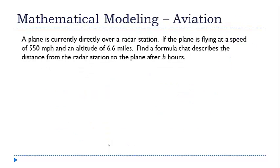So here we have another example from aviation. We have a plane that is currently directly over a radar station. So we have the ground here, and we have this radar station, and we have a plane that is directly above it. And when it's directly above it, the difference here is the altitude, which is 6.6 miles. And this plane is moving forward at a speed of 550 miles per hour. So if the plane travels for h hours, that means the distance that it's traveled is 550h. And the question wants me to come up with a formula that describes the distance from the radar station. So that's this distance here.